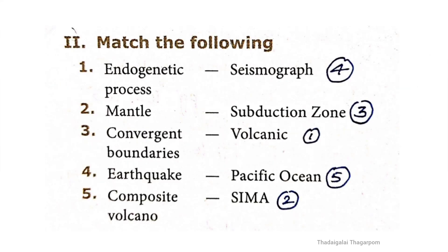Roman numeral two: Match the following. First: endogenetic process — volcanic eruption. Second: mantle — Sima. Third: convergent boundaries — subduction zone. Fourth: earthquake — seismograph. Fifth: composite volcano — Pacific Ocean. The correct order is four, three, one, five, two.